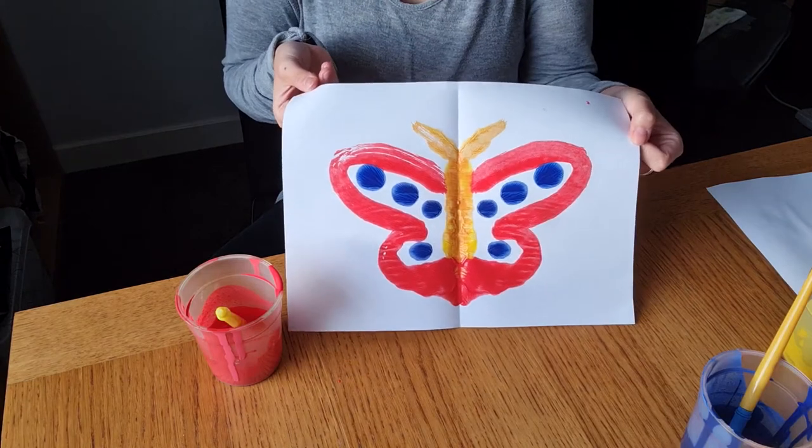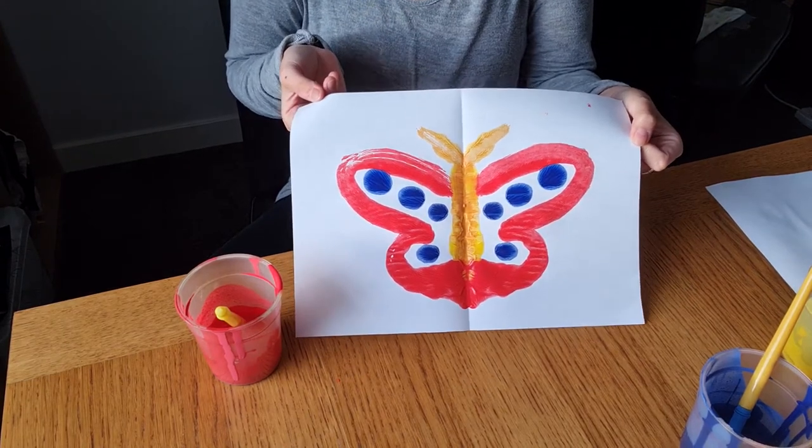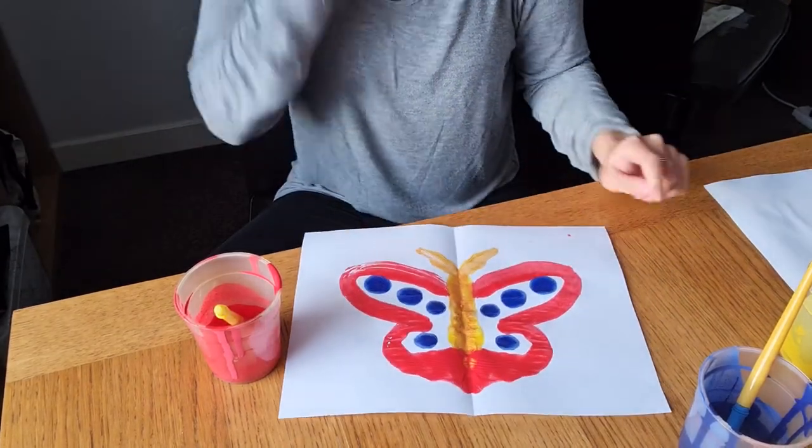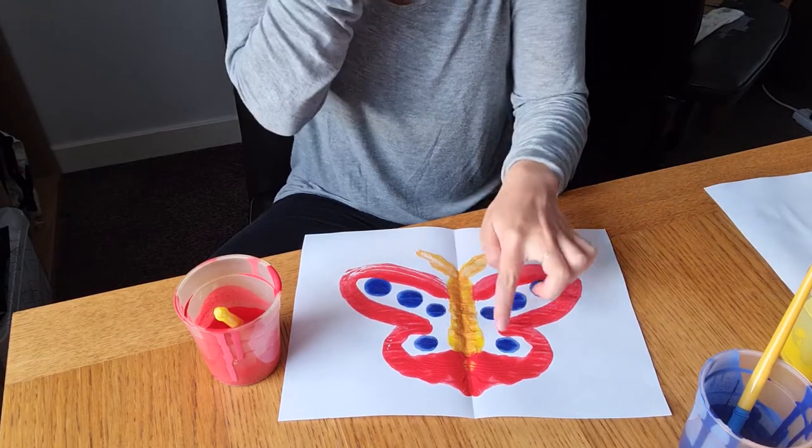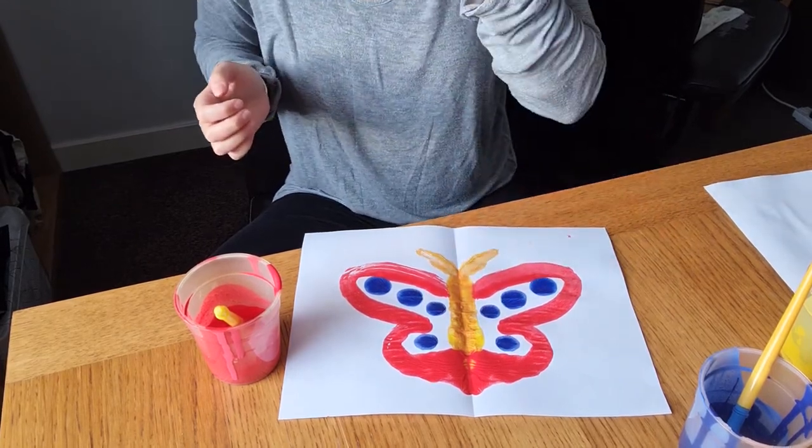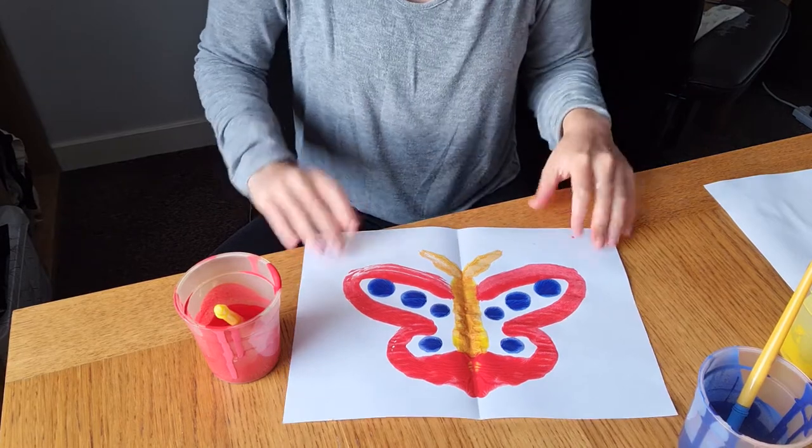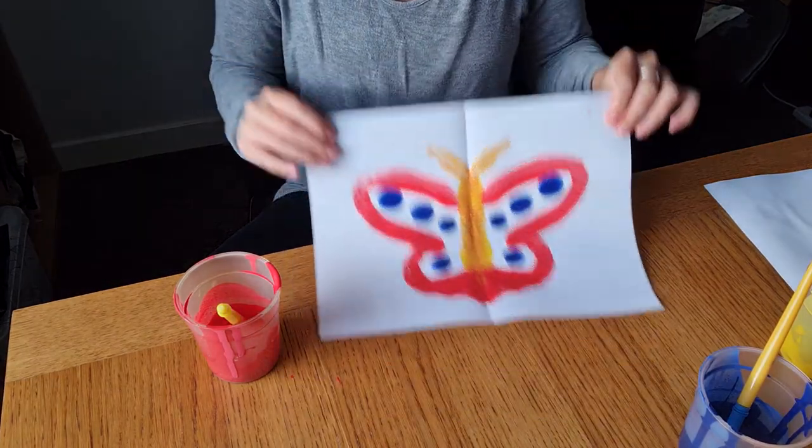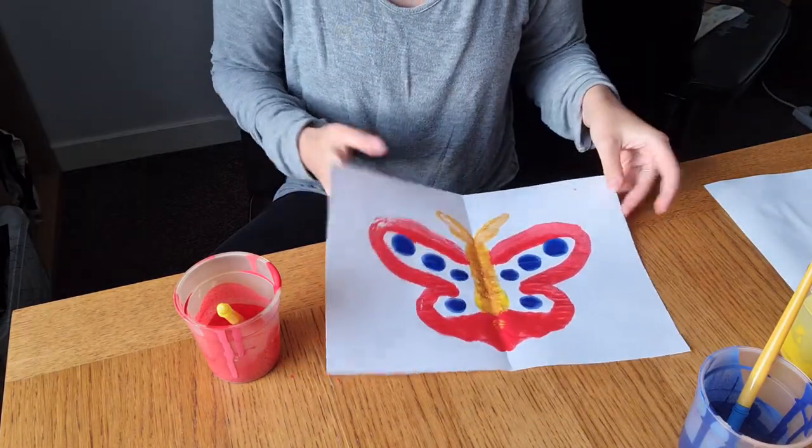You can do any type of pattern you want for a butterfly. I only did spots because it was a little bit easier for me to do on the camera upside down, but as I said, you can do whatever you like. You can do lots of things in symmetrical pictures. You could make a face, you could do some shapes.